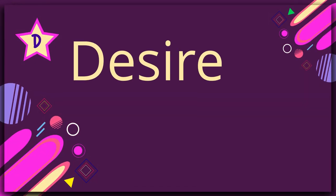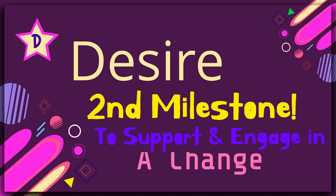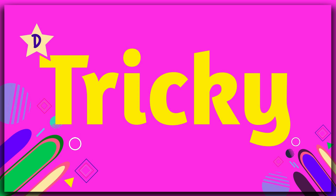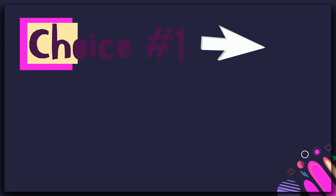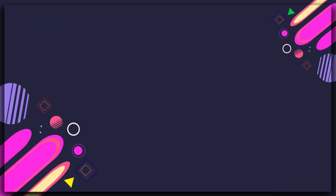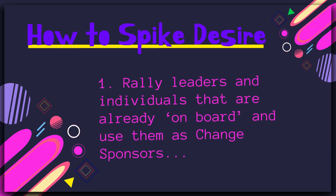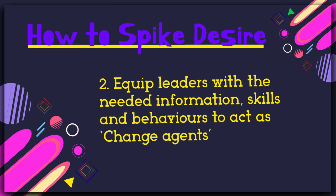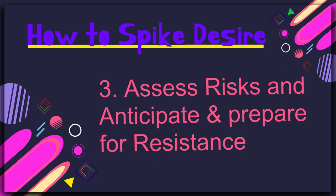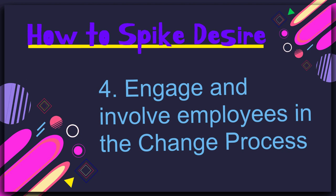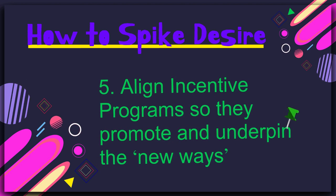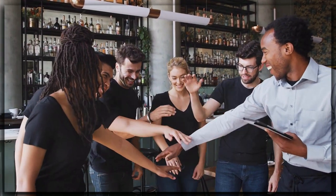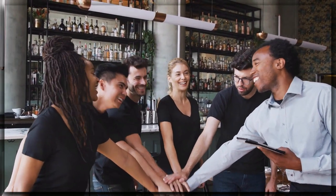D — Desire to support the change. When awareness has been established, the next step is for individual participants to make a personal decision to partake in the change. Desire represents the willingness to support and engage in a change. This is a tricky step, since even though change leaders can take specific action to influence desire, each individual ultimately makes his or her own choice to support or not support the change. Suggestions to spike desire include: rallying leaders already on board as change sponsors; equipping leaders with needed information, skills, and behaviors to act as change agents; assessing risks and anticipating resistance; engaging employees in the change process; and aligning incentive programs to promote the new ways. The actions and words of leaders and executives have a tremendous influence on an employee's desire to support a change.